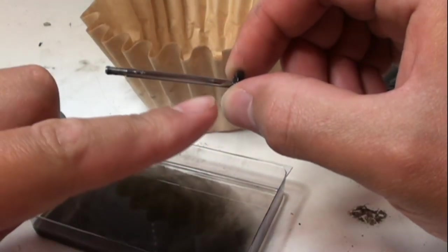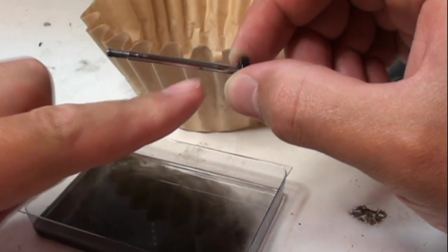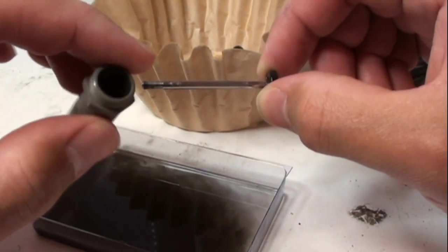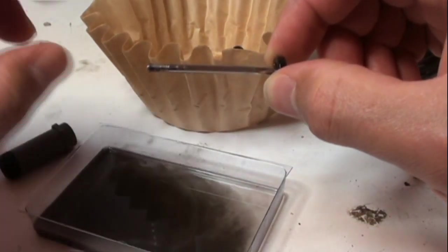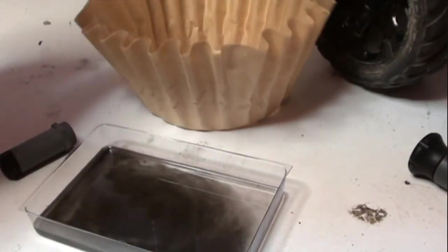Now with the back shocks, there's another little black washer that went around this rod and it got stuck in there, which I had to pry it out. But with the front shocks, it doesn't have them. So go ahead and put that in there.